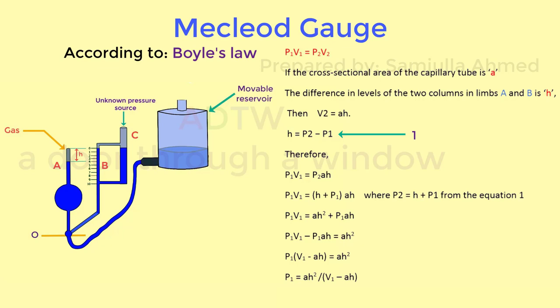Since AH is very very smaller than V1, therefore P1 is equal to AH square by V1.